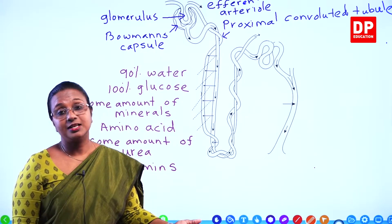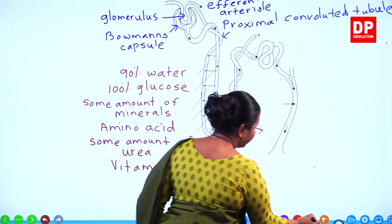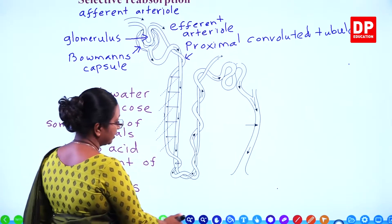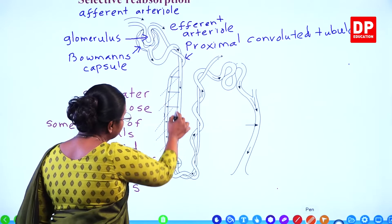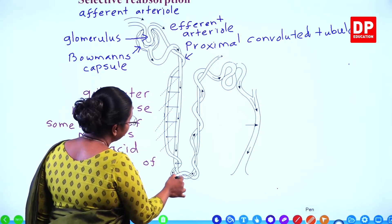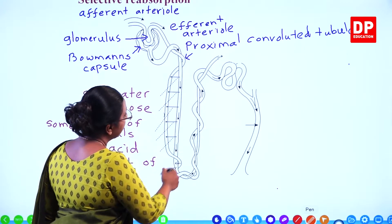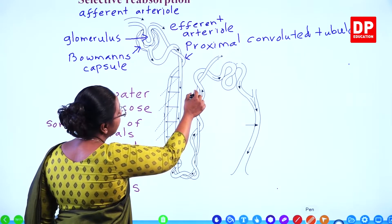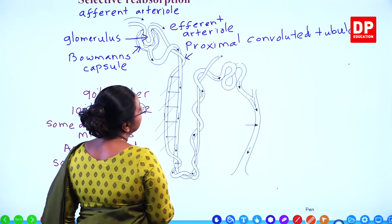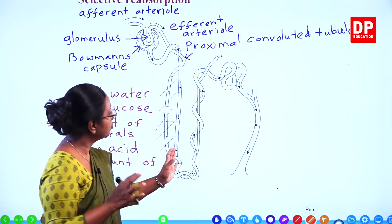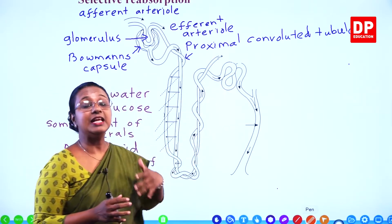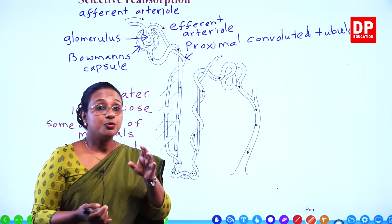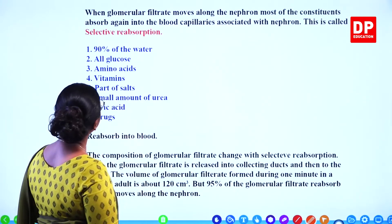About 95% of the glomerular filtrate is reabsorbed as it moves along the nephron. In a healthy adult, 120 cubic centimetres of glomerular filtrate is produced per minute, but 95% of it is reabsorbed. Only a small amount becomes urine. From all the nephrons, urine enters the collecting duct, then the pelvis, then the ureters, and gets collected inside the bladder. When the bladder is full, you get the urge to pass urine — you should not postpone urination as it is not good for health.